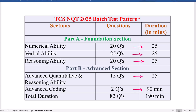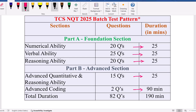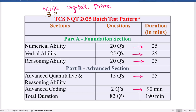Regarding roles, there are Ninja, Digital, and Prime. The Ninja package is around 3.36 LPA, Digital is 7.2 LPA plus joining bonus (bonus depends on modules completed), and Prime is 9 LPA. For PG students there is extra salary plus joining bonus as well.